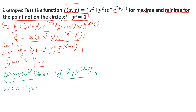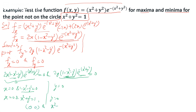Similarly from fy = 0, we get y = 0 or (1 - x² - y²) = 0. So the conditions are: x = 0, y = 0, and x² + y² = 1. The stationary points we obtain are (0, 0) and the circle x² + y² = 1.